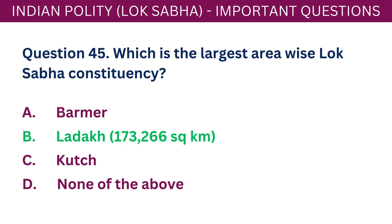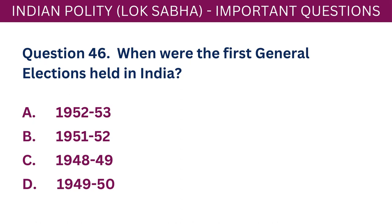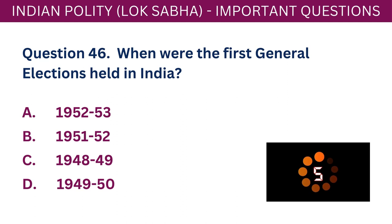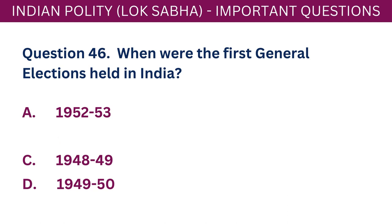Question 46: When were the first general elections held in India? A. 1952-53. B. 1951-52. C. 1948-49. D. 1949-53. The correct answer is B - 1951-52.